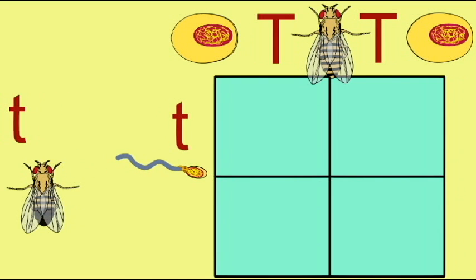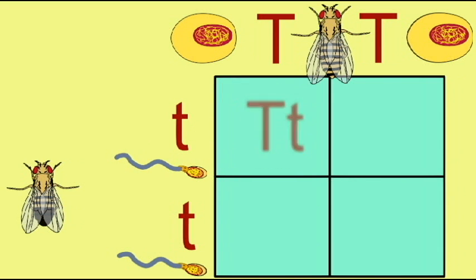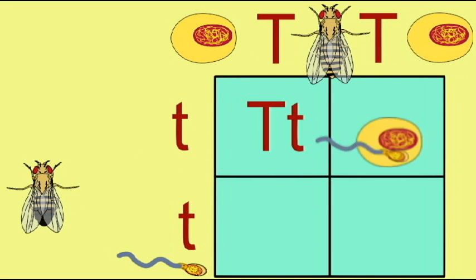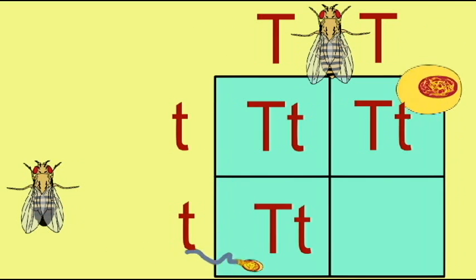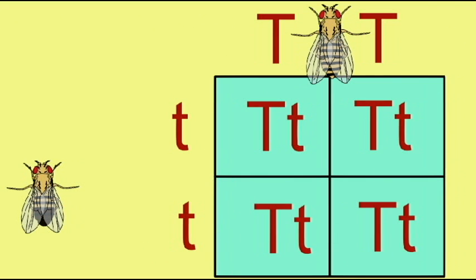When a homozygous dominant fly is mated to a homozygous recessive fly, the gametes carry one allele each, and all of the offspring are heterozygous and would thus have the dominant phenotype.